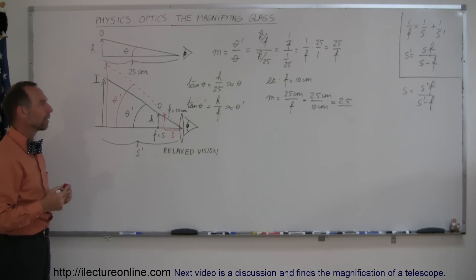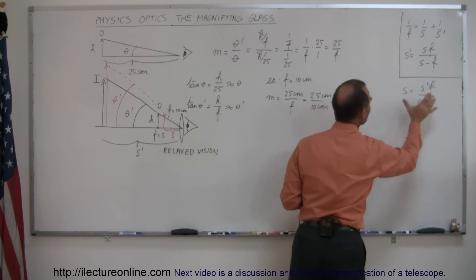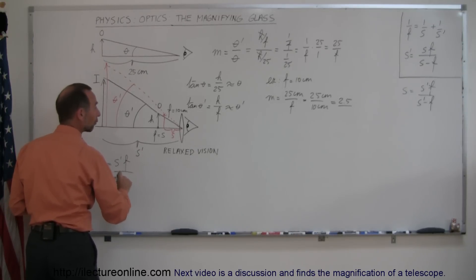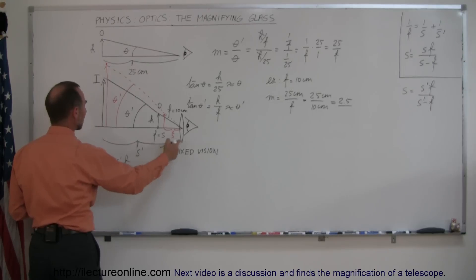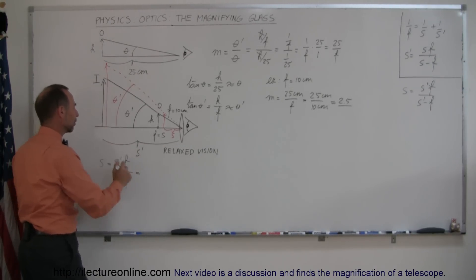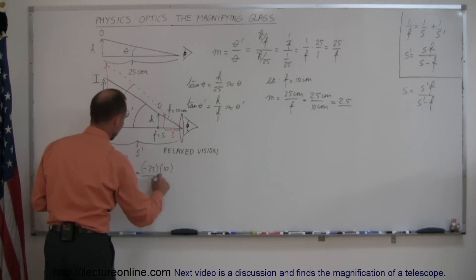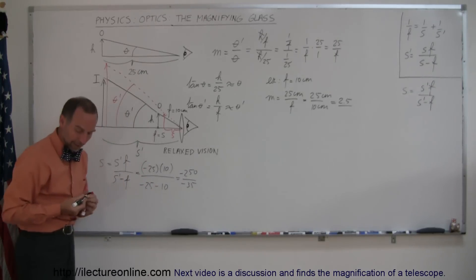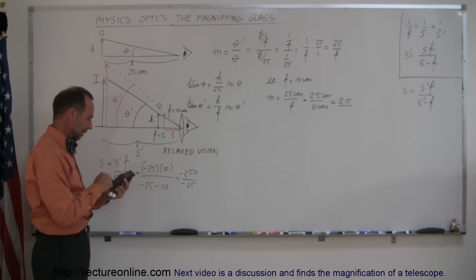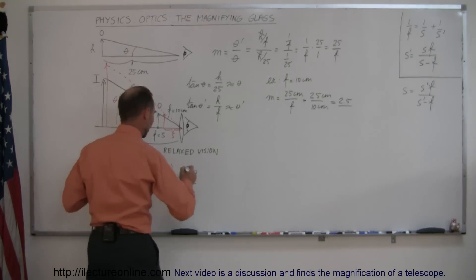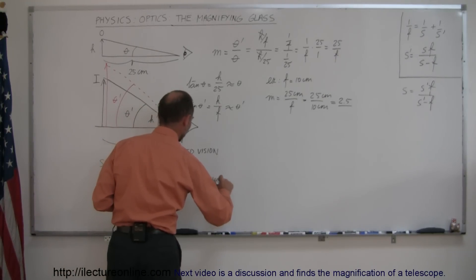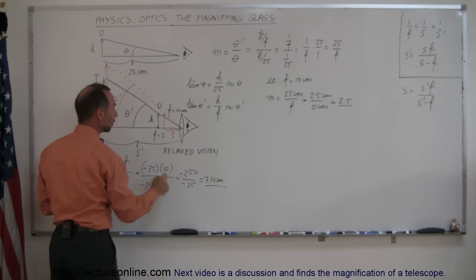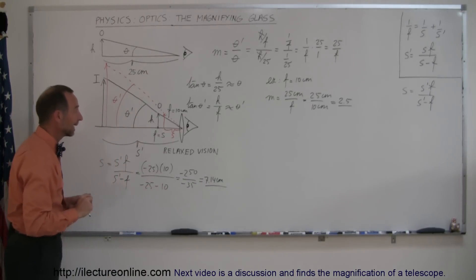So where does the object need to be placed? Let's solve the equation for the object distance. We have s equals s prime f over s prime minus f. Since the image is in front of the lens, s prime is minus 25 centimeters, and the focal length is still 10. So s equals minus 25 times 10 divided by minus 25 minus 10, which is minus 250 over minus 35. Grabbing a calculator: 250 divided by 35 equals 7.14 centimeters. So if you bring the object in a little bit closer to produce a larger image at a distance of 25 centimeters, you'll have to put the object at 7.14 centimeters.